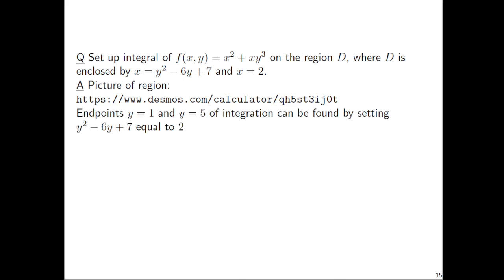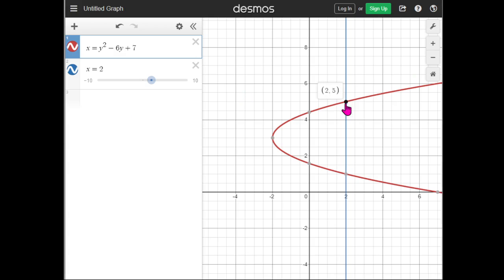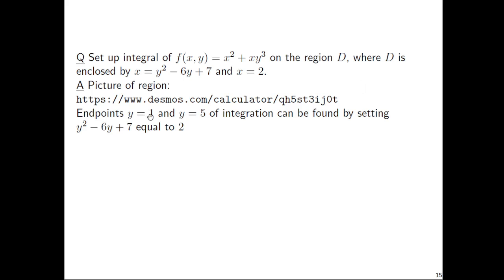Also, let's just point out that the constant y ranges between 1 and 5. And again, we could do this using algebra, setting the x's equal and solving for y. But let's just use the graphing calculator for a moment. Yeah, y = 1, y = 5. So we've got the endpoints of integration for the dy should be y = 1 and y = 5. And I just mentioned here that you could do this doing some algebra.